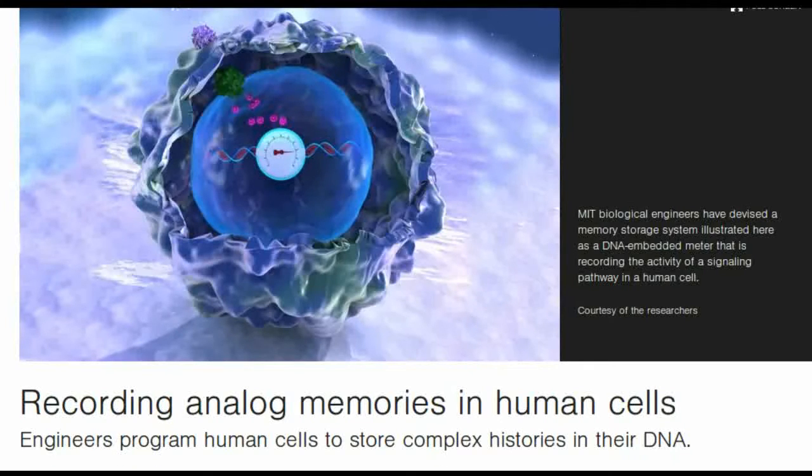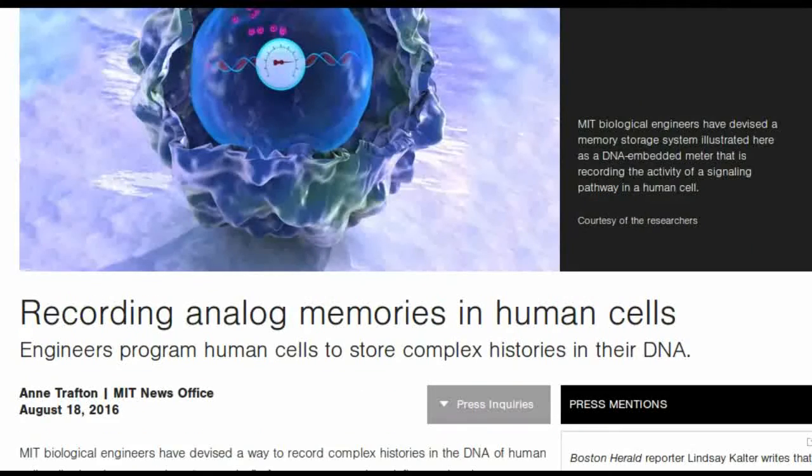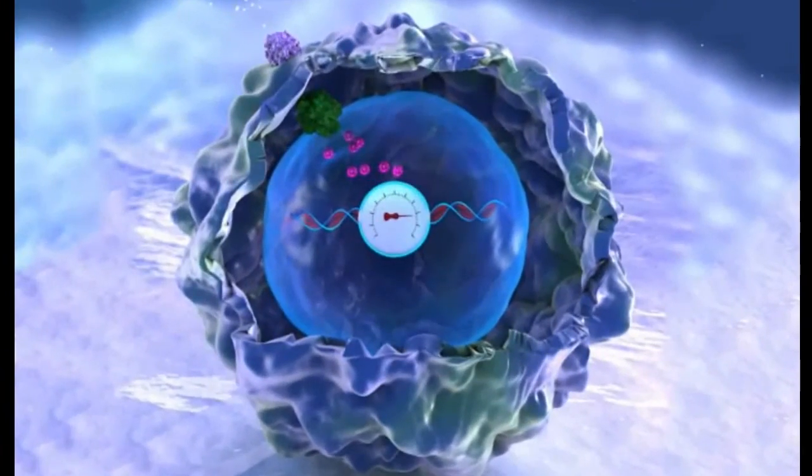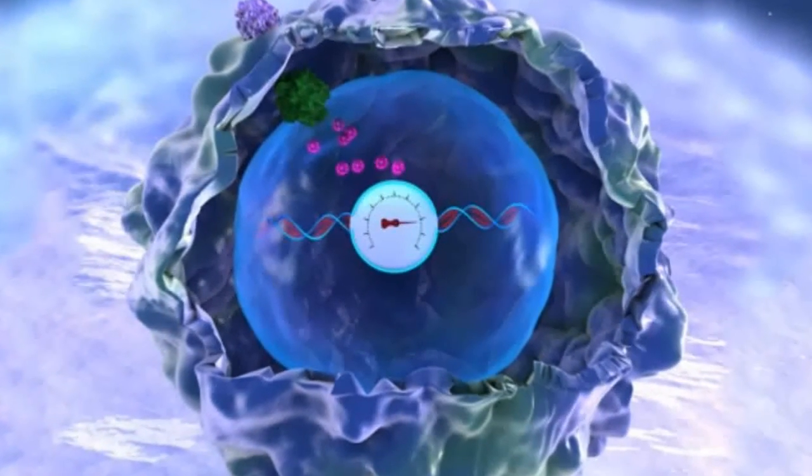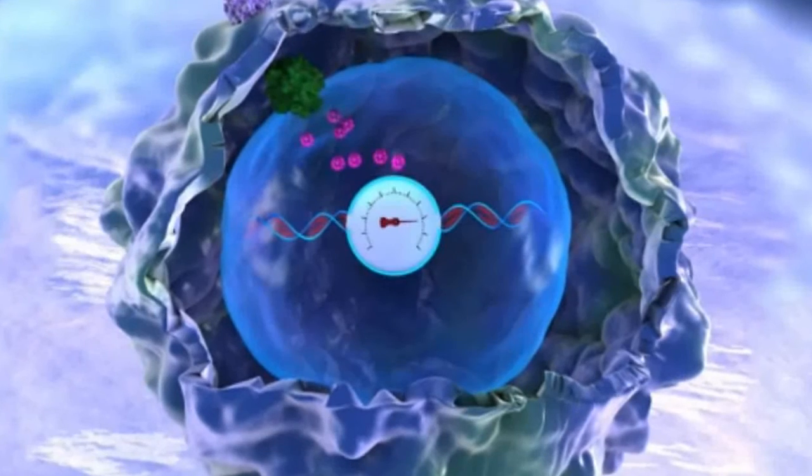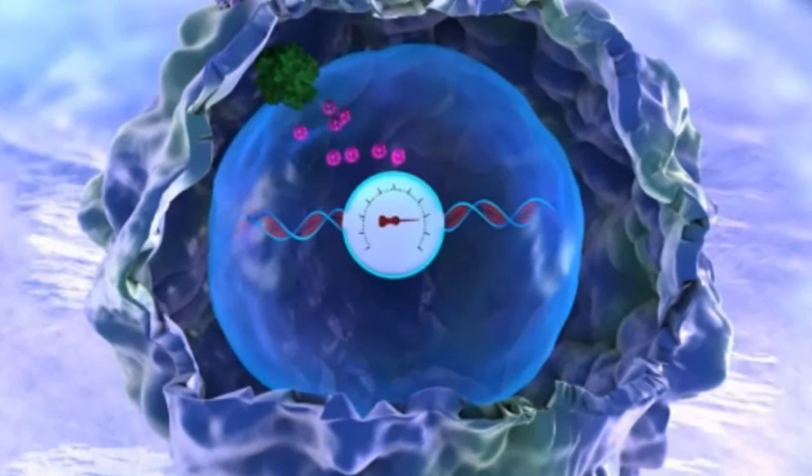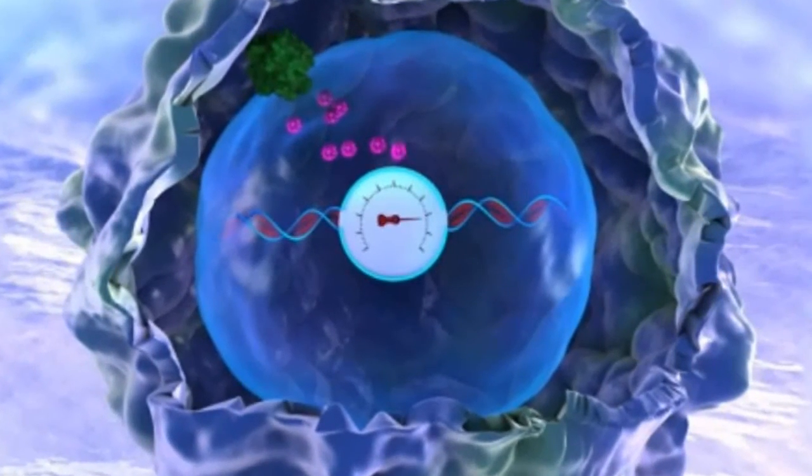This analog memory storage system, the first that can record the duration and intensity of events in human cells, could also help scientists study how cells differentiate into various tissues during embryonic development, how cells experience environmental conditions, and how they undergo genetic changes that lead to disease.